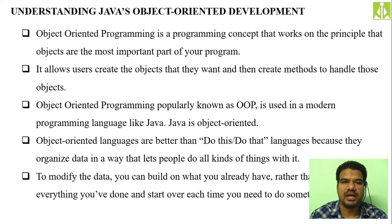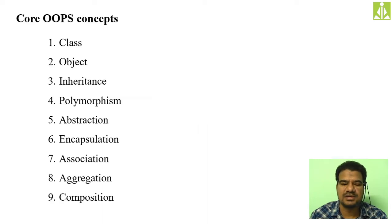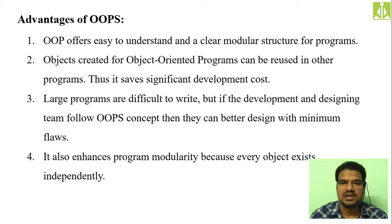We discussed the differences between objects and classes — what exactly objects and classes are. Then the core OOP concepts like classes, objects, inheritance, polymorphism, abstraction, encapsulation, association, aggregation and composition — all these things we discussed in detail with real-time examples. We also discussed the advantages of object oriented programming.